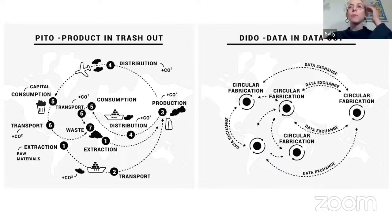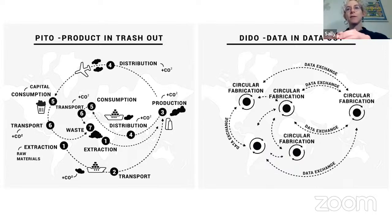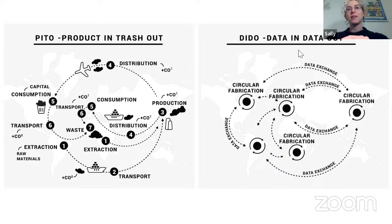We want to move to a DITTO model — data in and data out. As opposed to moving physical products, we move data between different nodes around the world. That's how we share information about how you can do or make just about anything.